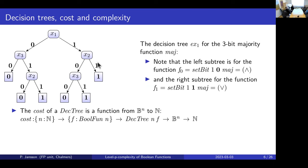They define in the literature the cost of a decision tree as a function from a tuple to a natural number — it's the length of the path through the tree for that particular tuple. For this tree, if you get the input one-zero-zero, you need all three questions. But for one-one-anything, you will stop after only two questions. So here, actually half of the inputs have cost two and half have cost three. The average cost of this tree is two and a half, the minimum is two, the maximum is three.